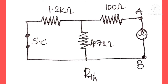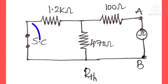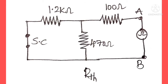In the next step we will find Rth, which is the Thevenin resistance. This resistance will be found in between the terminals A and B by replacing the voltage source with a short circuit. We have already observed this in our Thevenin's theorem.